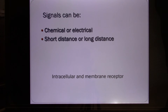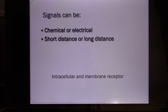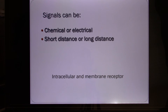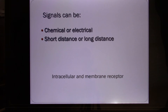The signals used by cells can be chemical or electrical — like neurons and muscles use electrical signals. Chemical signals are the ligands: neurotransmitters, hormones, and paracrine signals all belong to the chemical category. They can travel short or long distances. Hormones travel through blood, so they're long distance. Neurotransmitters are released in the synapse, which is a very short distance area.